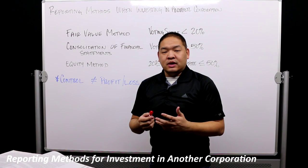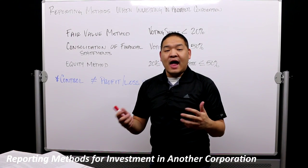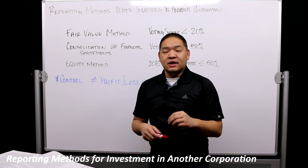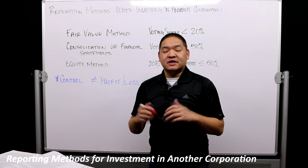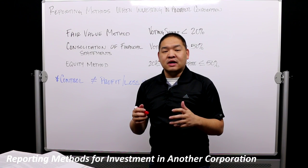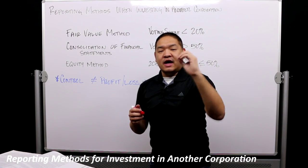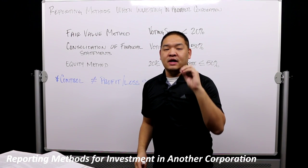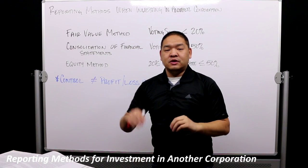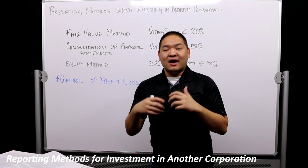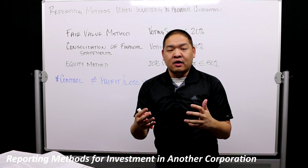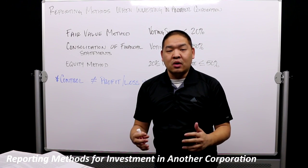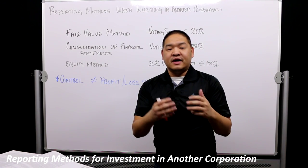Under GAAP we have percentages that help guide us when it comes to control. But these are guidelines, not hard rules. It's not simply that 18% means one method or 25% means another. It really comes down to the idea of how much control the investor actually has over the investee.